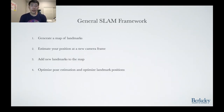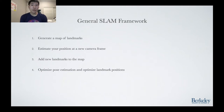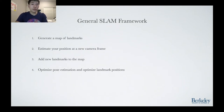In general, a SLAM framework is built with the following four steps. First, initialize a map of landmarks — referring to 3D key points and their associated features. Second, receive a new frame from the camera and estimate the change in position and rotation of this frame. Third, extract landmarks from this new frame and add them to our map. Finally, optimize the pose estimation and optimize landmark positions. This process can continue indefinitely and the map continuously expands as new frames come in.